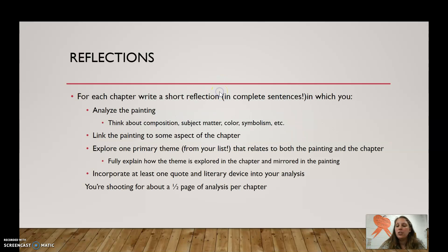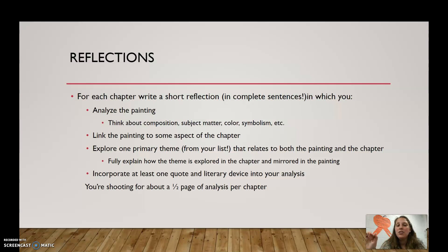For each chapter I created, I paired it with a work of art. For each chapter you're going to analyze a painting, and I want you to think about composition, subject matter, color, symbolism, and anything else you can think about the painting. I'm going to link the painting to some aspect of the chapter, and then I want you to explore one primary theme from that list — like we did on the 31st — that relates to both the painting and the chapter. One theme for the painting and the chapter. Then you're going to explain how that theme is explored in the chapter and mirrored in your painting. You need to incorporate at least one literary device into your analysis and make sure you underline it. We're looking for about a half a page of analysis per chapter.